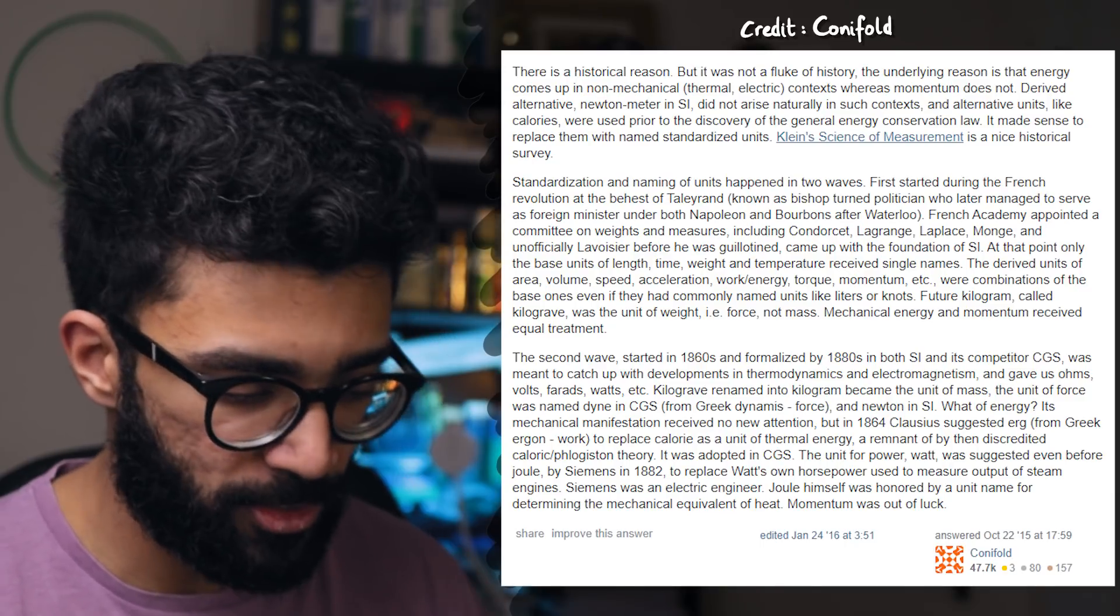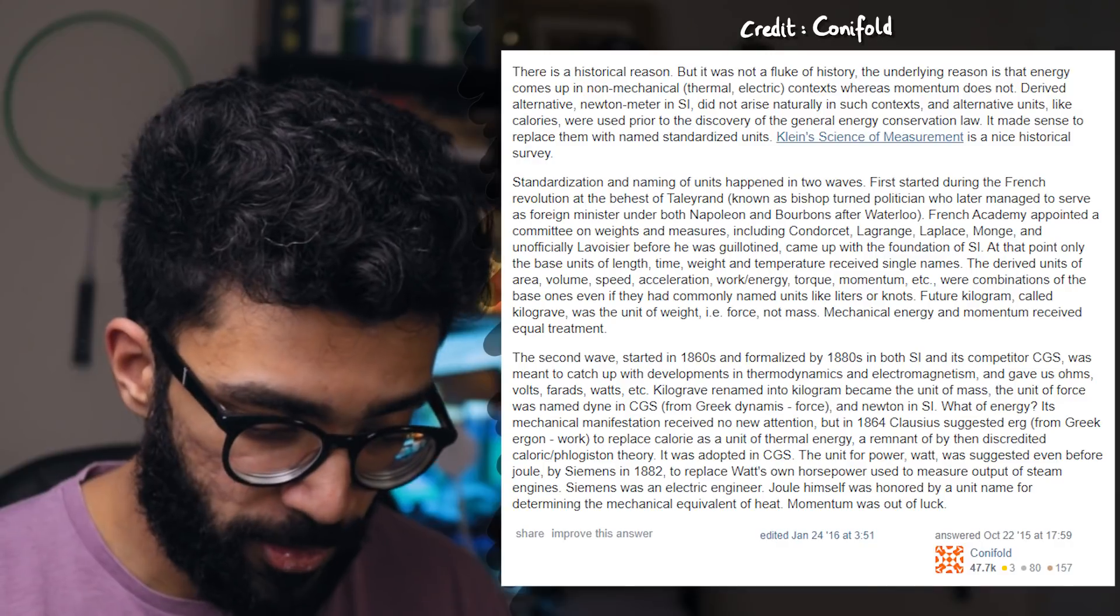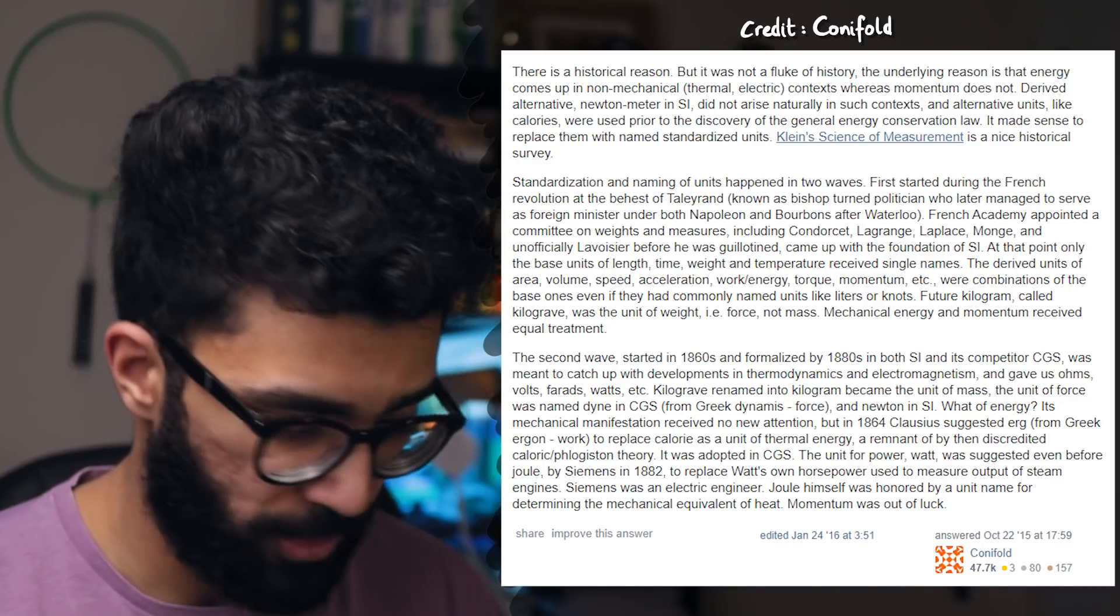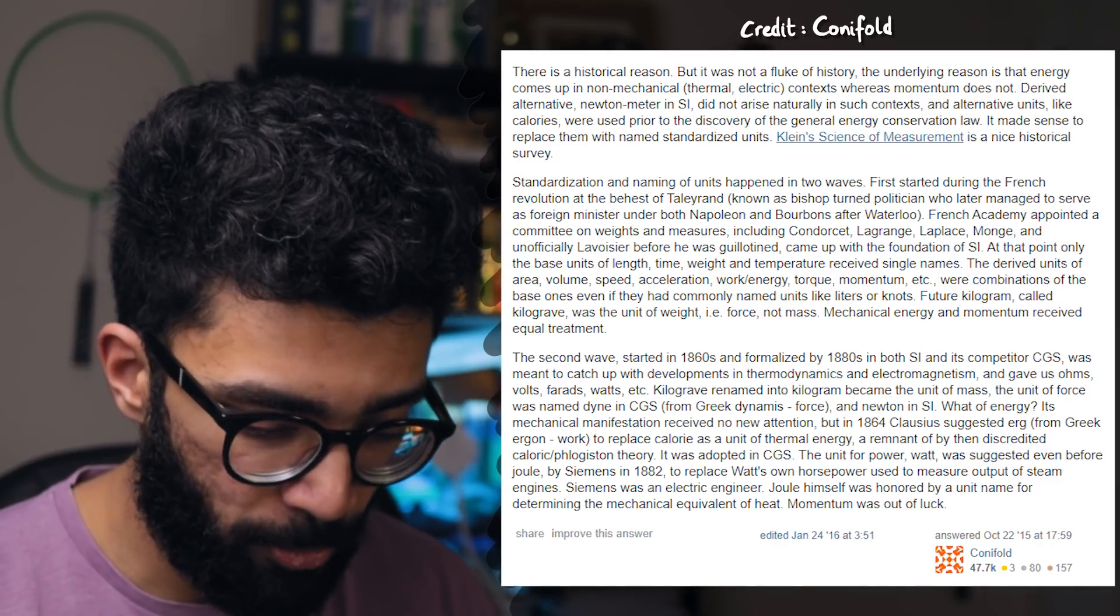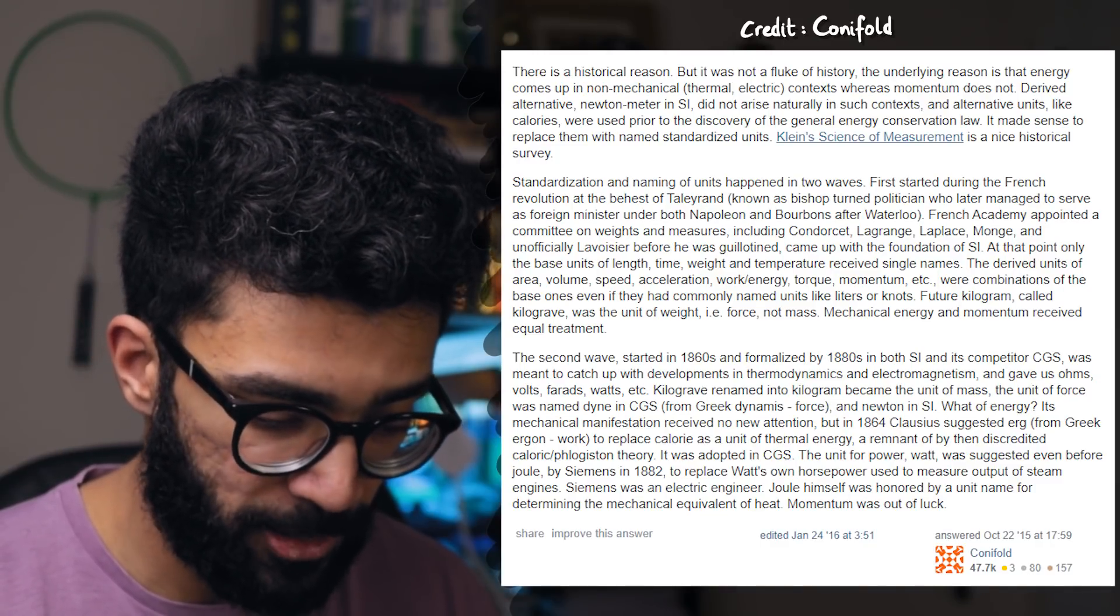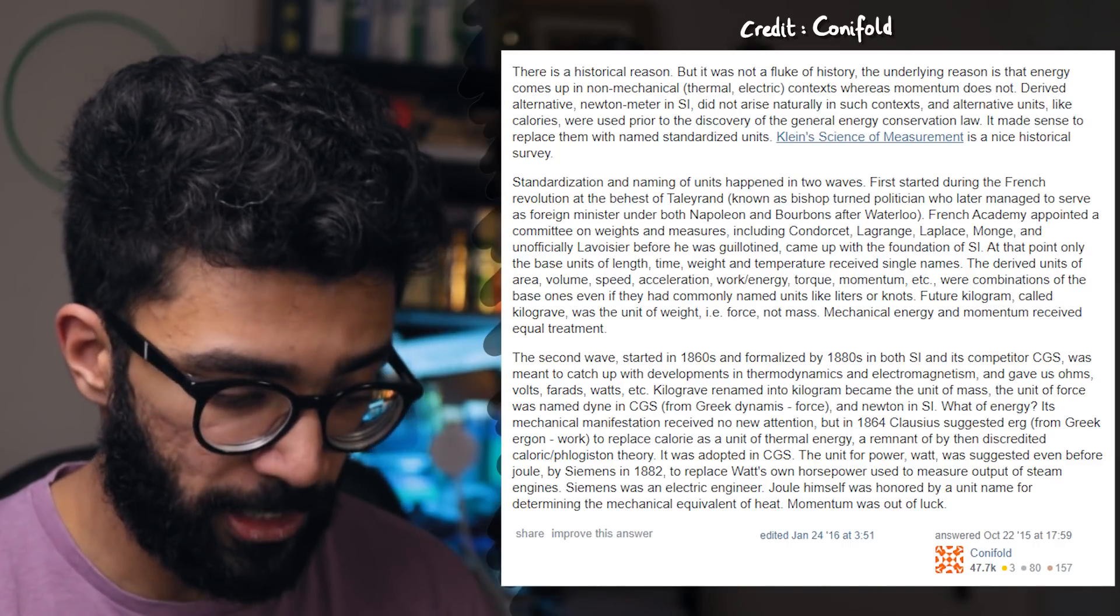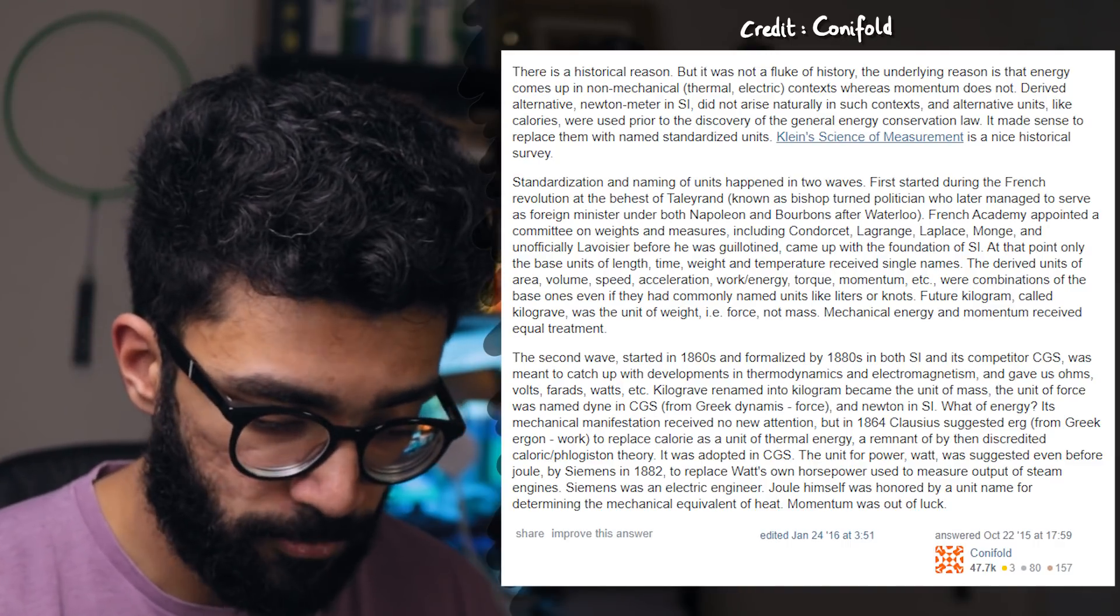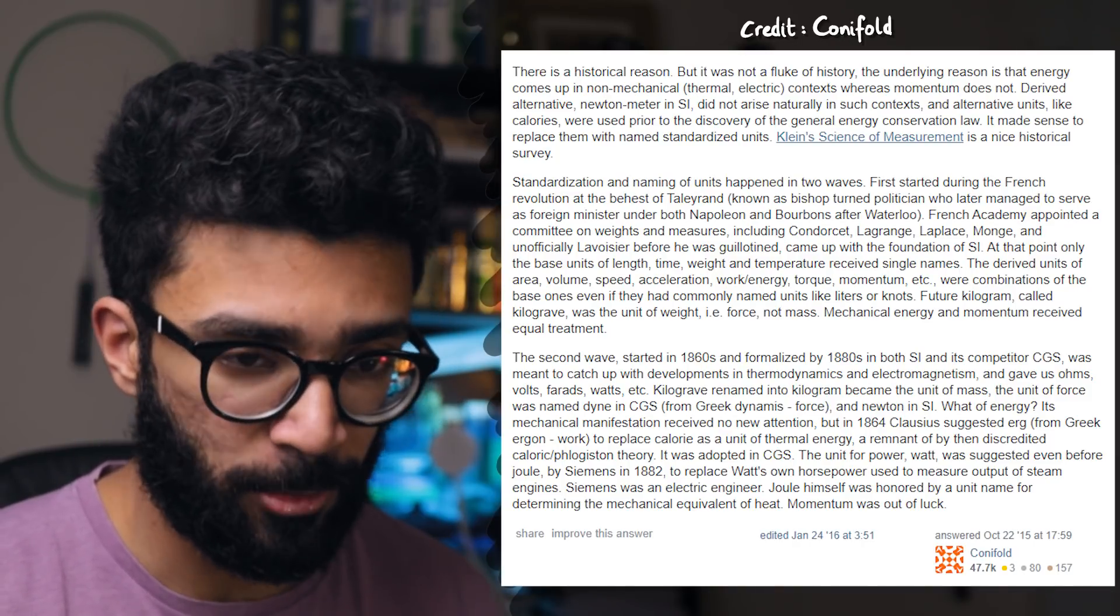At that point, only the base units of length, time, weight, and temperature received single names. The derived units of area, volume, speed, acceleration, work or energy, torque, momentum, etc. were combinations of the base ones, even if they had commonly named units like liters or knots. Future kilogram, called kilograv, was the unit of weight, that is force, not mass. Mechanical energy and momentum received equal treatment.